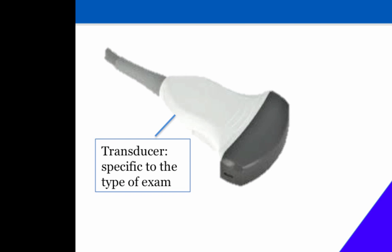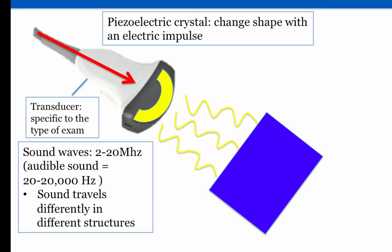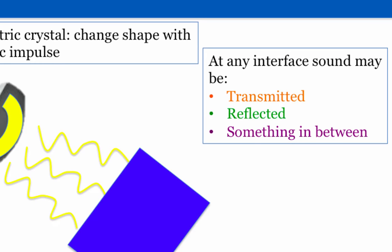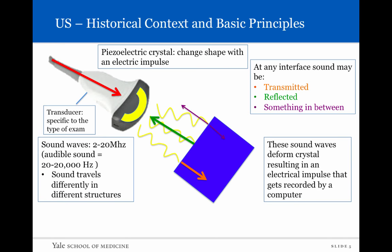Inside the transducer, there is a special structure made up of piezoelectric crystals. These crystals change shape with an electrical impulse — they vibrate, getting bigger and smaller — and this generates sound waves. These sound waves go from 2 to 20 megahertz in frequency, compared to audible sound at 20 to 20,000 hertz, so we don't hear them. As those sound waves go through the body, they travel differently in different structures. At any interface, they may be transmitted, completely reflected, or often something in between. Whatever signal returns to the transducer deforms the piezoelectric crystal again, resulting in an electrical impulse recorded by a computer.